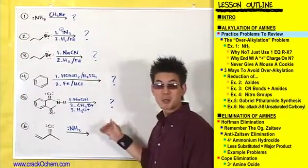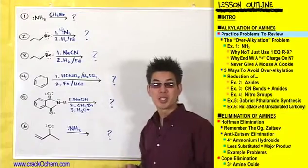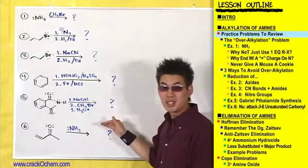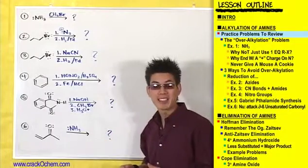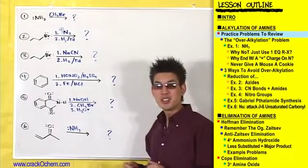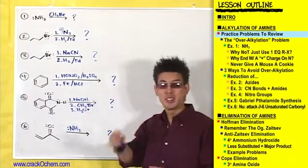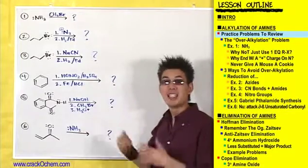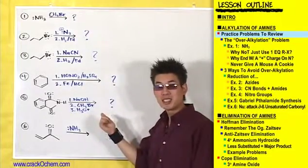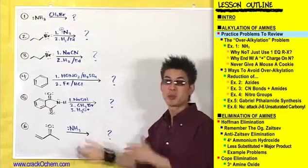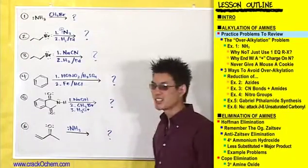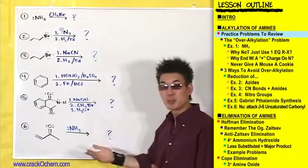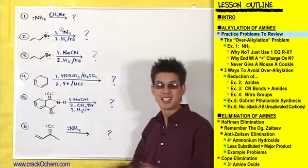So I've put up six practice problems for you to try out. And believe it or not, you already know how to do each one of these reactions — we've done all of these reactions before. Why don't you take a minute, hit pause in your DVD player, copy down all of these reactions, and give them a try. If they don't look completely familiar to you, that's fine — that's why we're refreshing it right now. So hit pause, copy these down, give them a try, and then we'll come back and do them together.